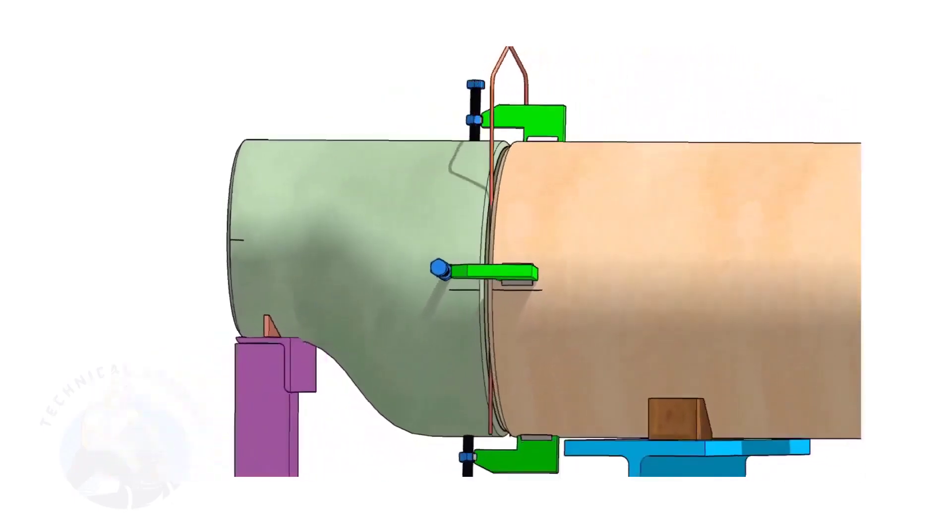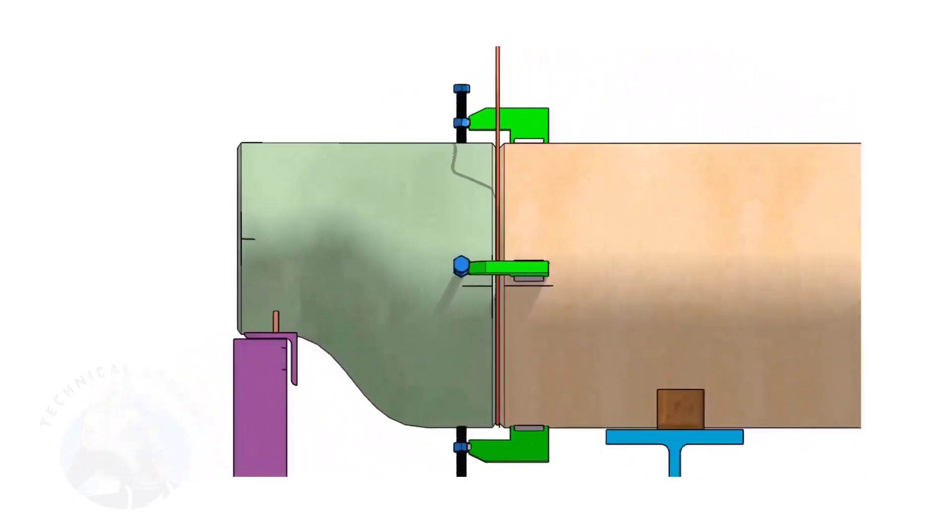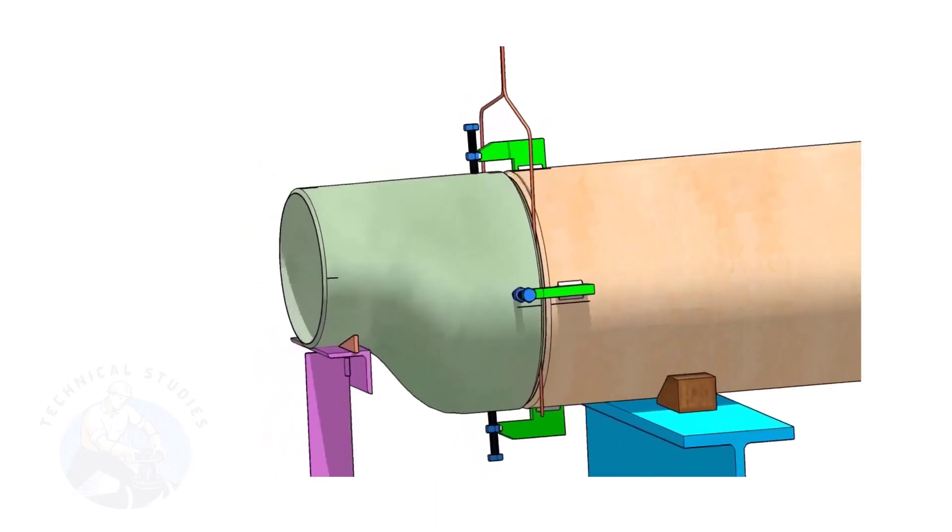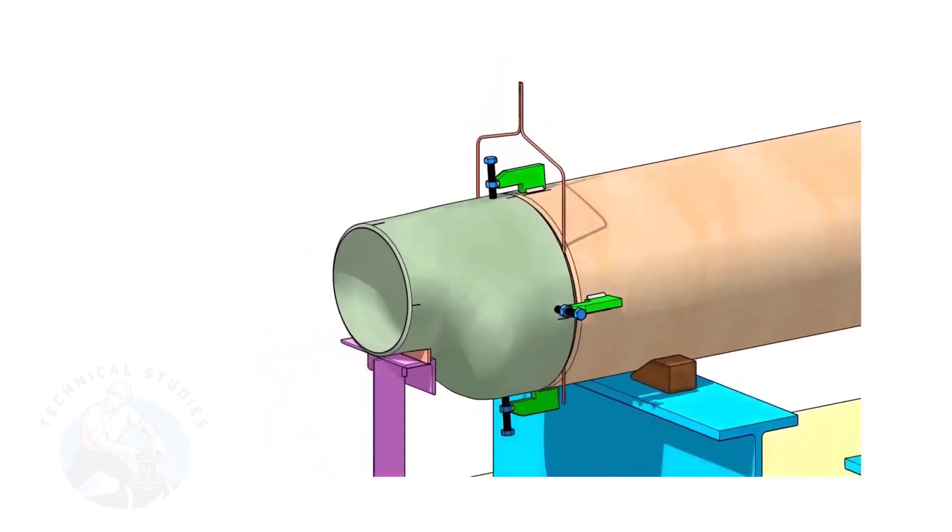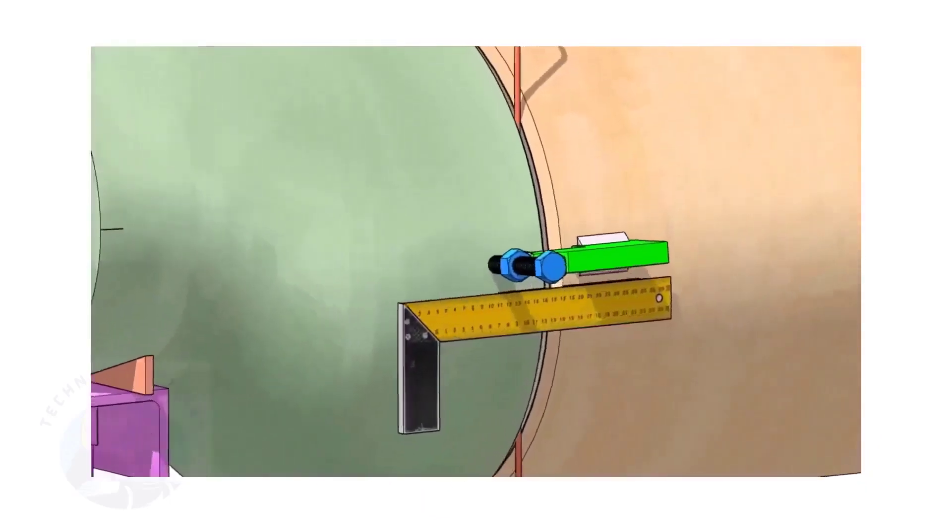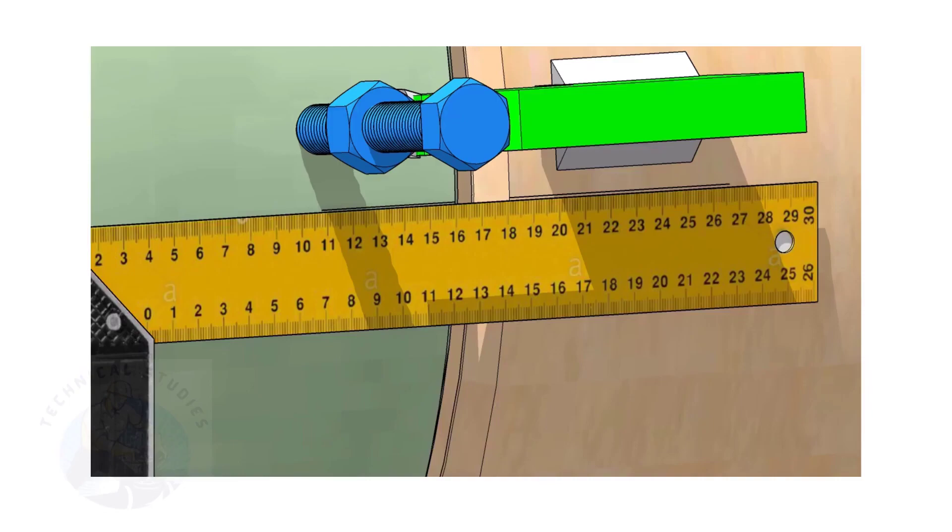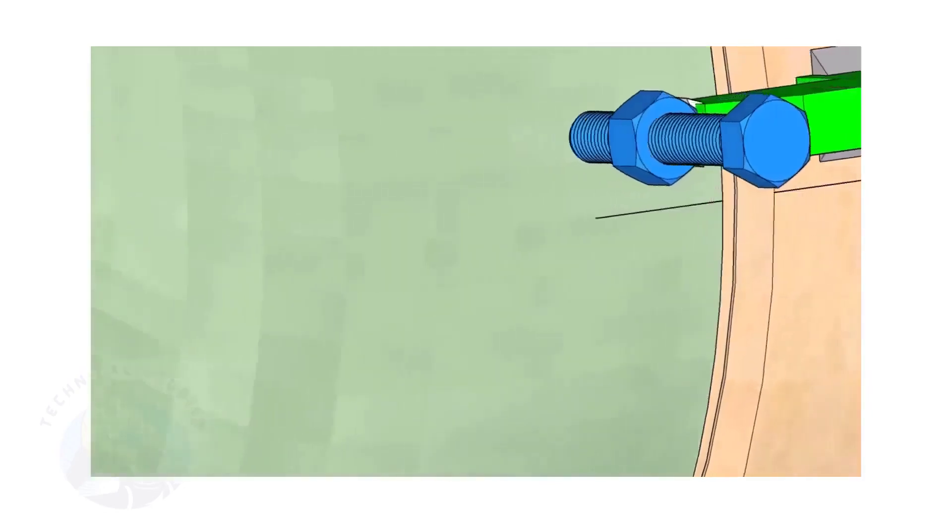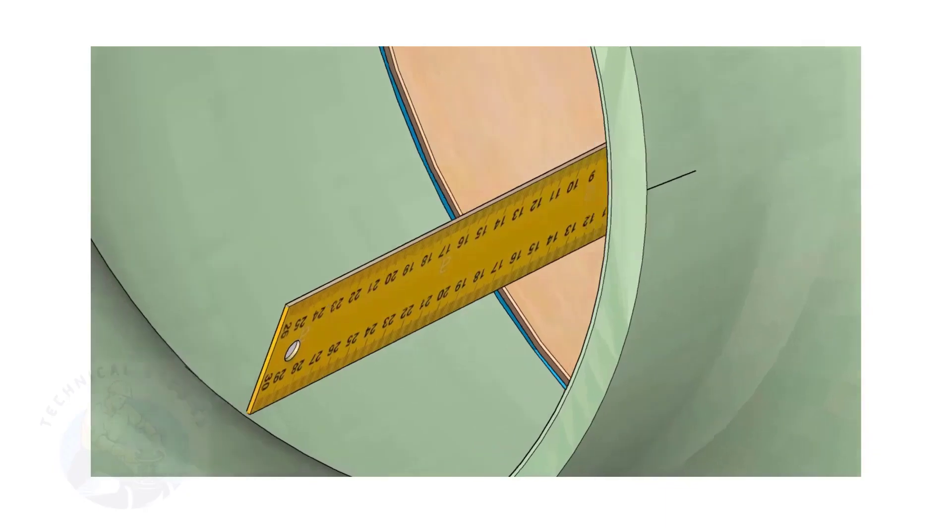Match the centerlines on the pipe and on the reducer. By adjusting the jack bolts, correct the overlap of the joint inside the pipe.